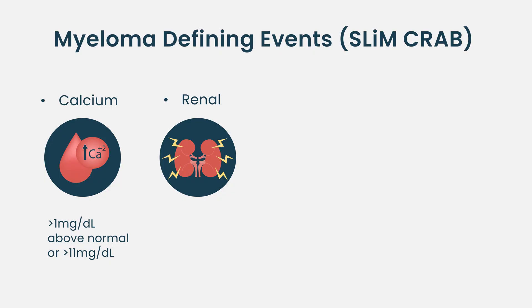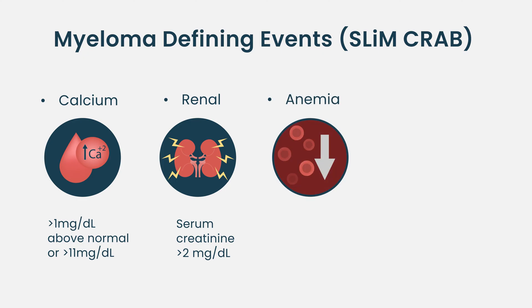R stood for renal insufficiency — kidney problem or inadequate kidney function. There are criteria for defining this, including serum creatinine level, which is a reflection of kidney function, defined as greater than two milligram per deciliter.